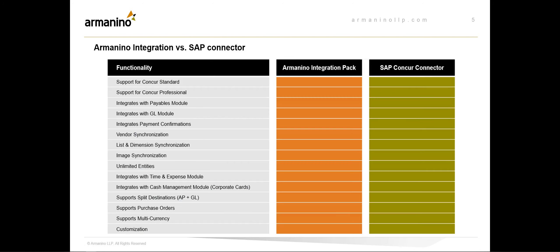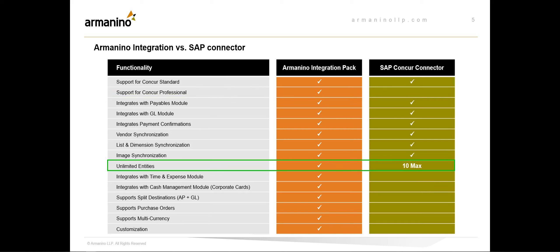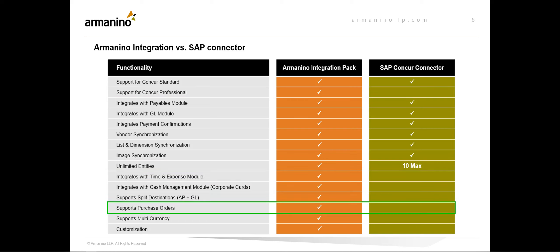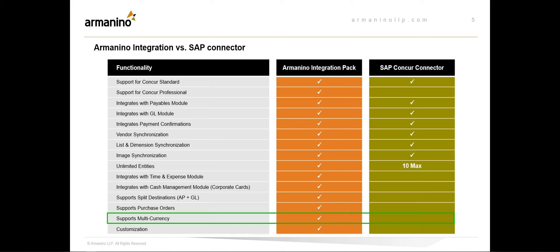You may have seen the Concur connector from SAP in the Sage Intact marketplace. Some companies will find that connector sufficient, while other customers will benefit from Arminino's integration with its more advanced set of features. As you can see from this comparison, there are many extra features to be found in the Arminino integration, including support for Concur Professional instead of just Standard, an unlimited number of Concur entities rather than just 10, time and expense capability, corporate credit cards, purchase orders, and support for multiple currencies.